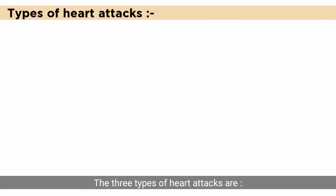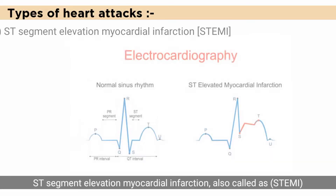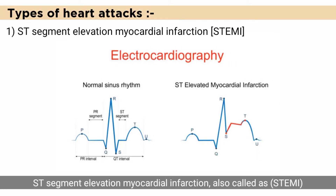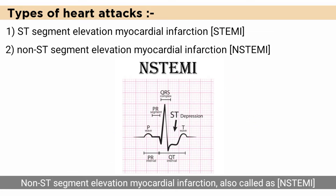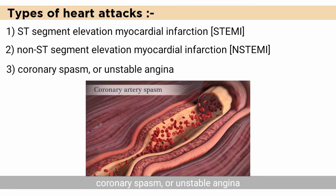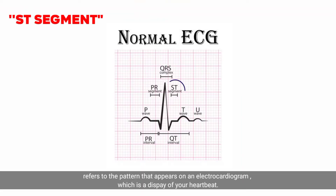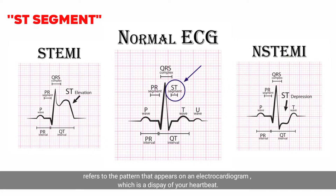The three types of heart attacks are ST segment elevation myocardial infarction, also called STEMI; non-ST segment elevation myocardial infarction, called NSTEMI; and coronary spasm, or unstable angina. ST segment refers to the pattern that appears on an electrocardiogram, which is a display of your heartbeat.